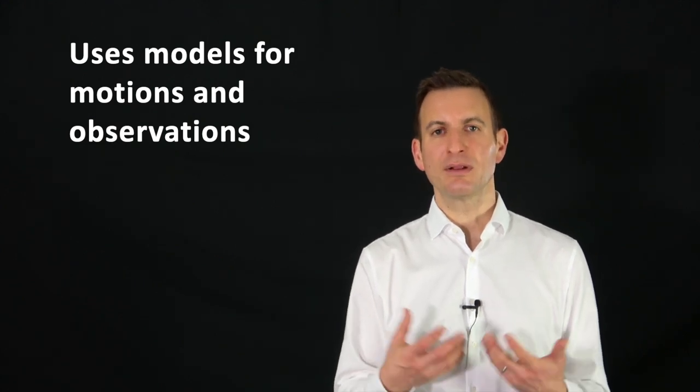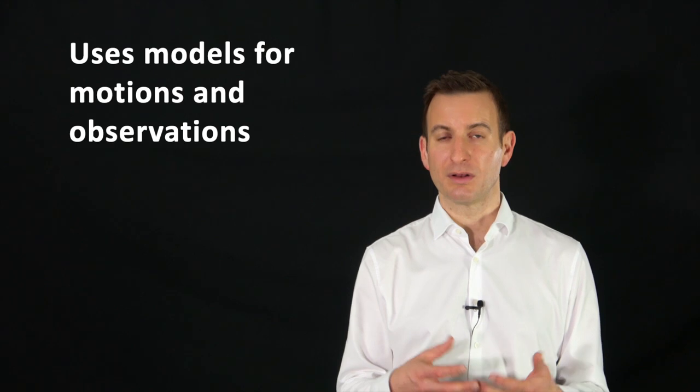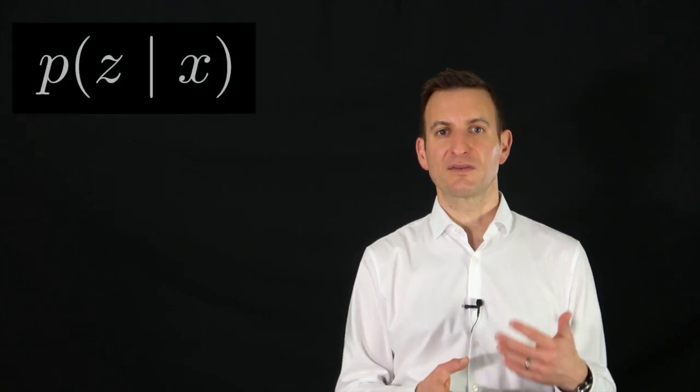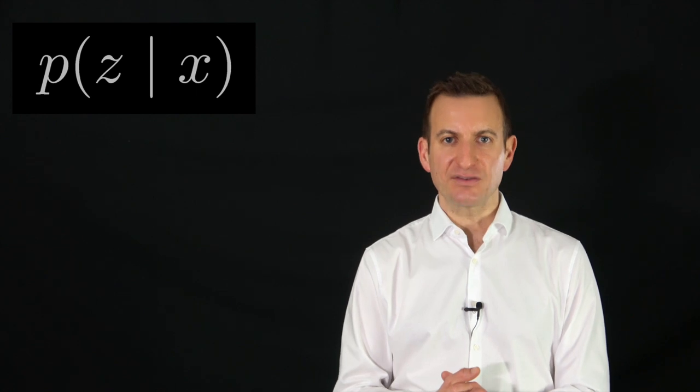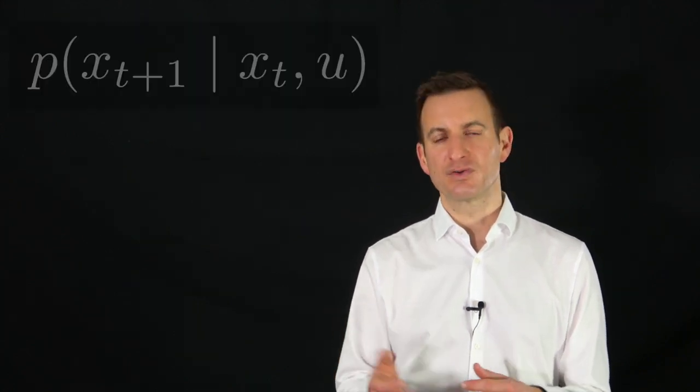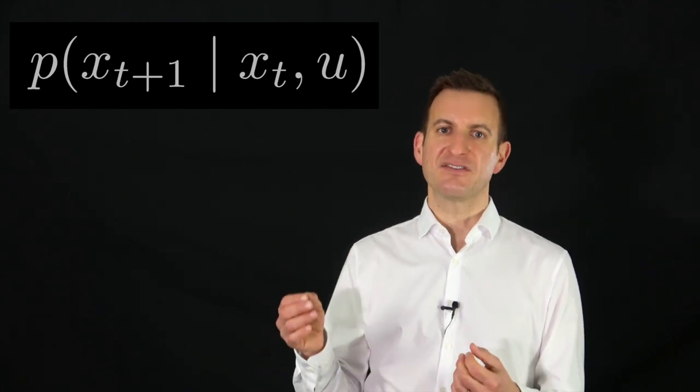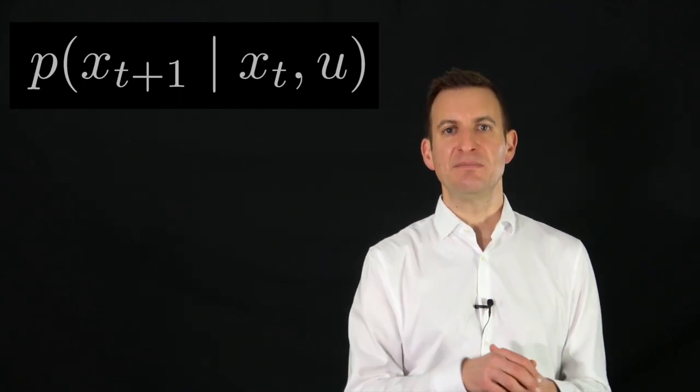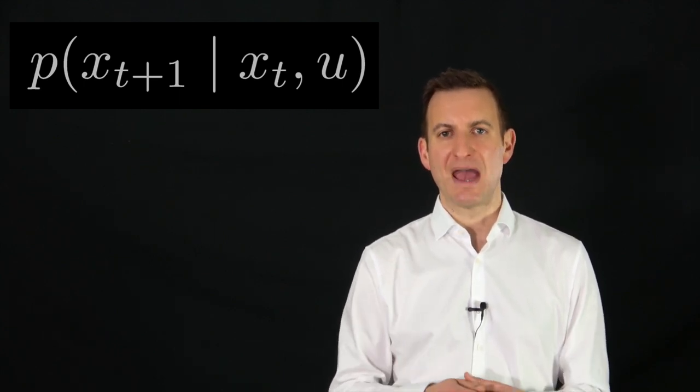What the Bayes filter uses is basically a so-called observation model or measurement model, and also a control model or a motion model. The observation model describes the likelihood of obtaining observation z given I'm in state x. The motion model or control model basically tells you how likely the state advances from xt to xt+1 given that we are executing the motion command u or the control command u. The control command u, for example, is how hard the gas pedal is being pressed in a car or what's the steering command that you're sending to your mobile robot. A sensor reading can be the result of a laser range scanner or a camera that is mounted on your vehicle.